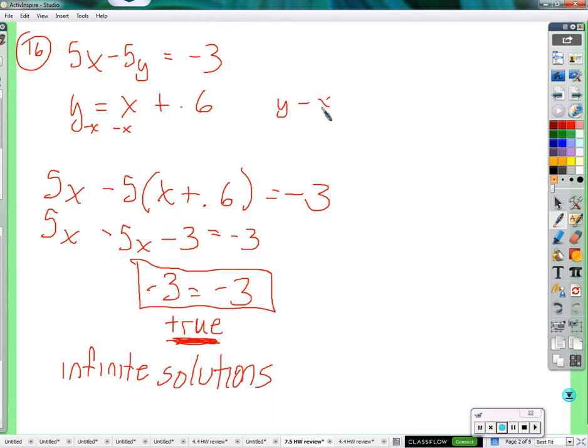y minus x equals 0.6. And let's see, I have negative x plus y equals 0.6. If I multiply both sides of this equation by negative 5, negative 5 times negative x is 5x. Negative 5 times y is negative 5y. And negative 5 times positive 0.6 is negative 3. And that's the same as the first equation. I just turned the second equation into an identical copy of the first equation. So again, infinite solutions. Two identical equations are going to have the exact same solutions. And they're going to have infinitely many of those.